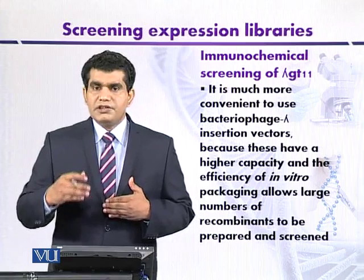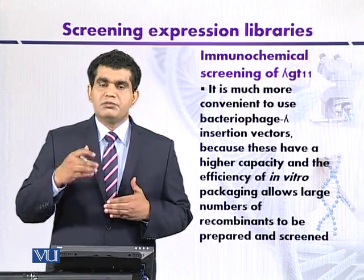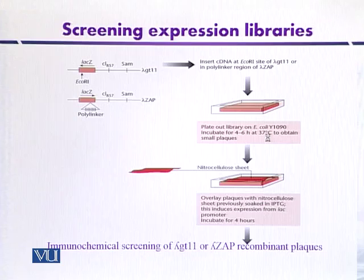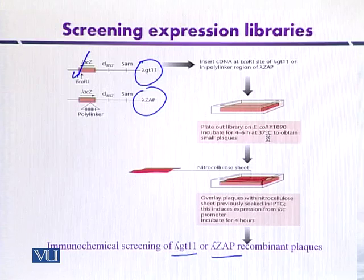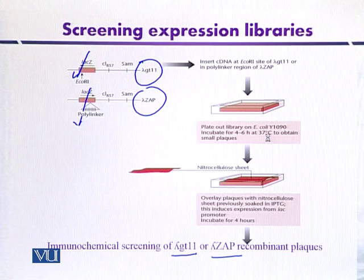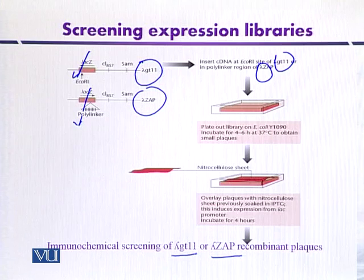One of the advantages of this technique is that replica plating is not required, as it was in the previous method. This is the basic outline of immunochemical screening using lambda GT11 and lambda zap recombinant phages. Different types of lambda insertion vectors can be used. The cloned gene can be expressed as a fusion protein because it can be inserted within the lambda Z gene, and the target DNA can be inserted at the polylinker site and digested with EcoRI in case of lambda GT11. The cDNA is inserted in the lambda GT11 or lambda zap vector, and then this recombinant bacteriophage lambda is plated on the host organism E. coli Y1090.